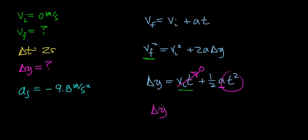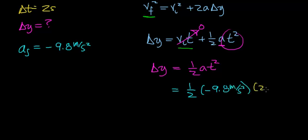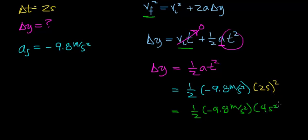To find the height of the cliff, the height equals one half of the object's acceleration times the time squared. The acceleration term is negative 9.8 meters per second squared because it's the force of gravity, and the object falls for a total time of two seconds. So we get one half of negative 9.8 meters per second squared times two seconds squared, which works out to four seconds squared. The seconds squared units cancel, and taking one half of negative 9.8 times four gives negative 19.6 meters.